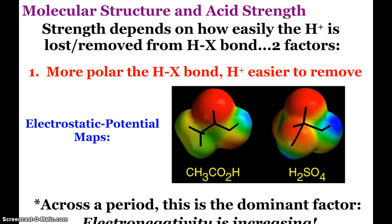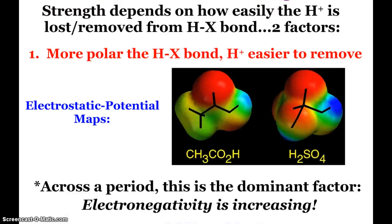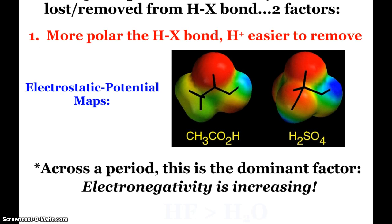So the last thing here for this video is molecular structure and acid strength. A little bit of a review from some of our trends stuff that we talked about. But the strength of an acid depends on how easily that hydrogen ion is lost or removed from whatever it's bonded to. And there's two factors. One, the more polar the bond is, the easier it is to remove that hydrogen ion. And here you see what are called electrostatic potential maps of both acetic acid and sulfuric acid. High electron densities are in red. Low densities are in blue. And then intermediate in between. And so you can see for sulfuric acid, the two hydrogens are very blue. For acetic acid, not so much. And so that's one way that they have shown why sulfuric acid is a stronger acid than acetic acid. You can get rid of that hydrogen ion easily.